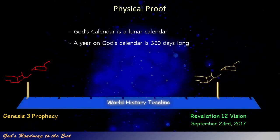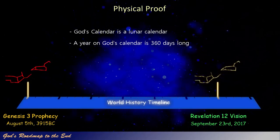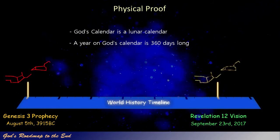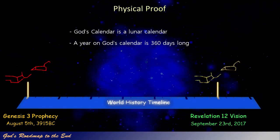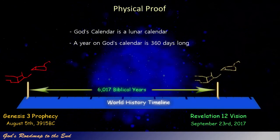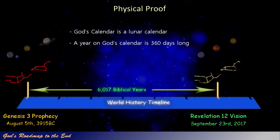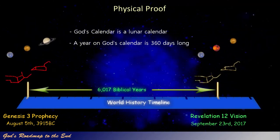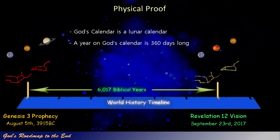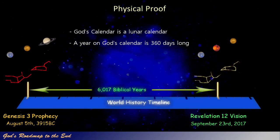This event is found to have occurred on August 5th, 3915 BC. There are then exactly 6,017 Biblical years between the prophecy given by God in Genesis 3 and the fulfillment of John's vision given in Revelation 12. The only difference between the two markers is the planets and their order that are added to the stars of the constellation Leo to make up the 12-starred crown on the head of Virgo.